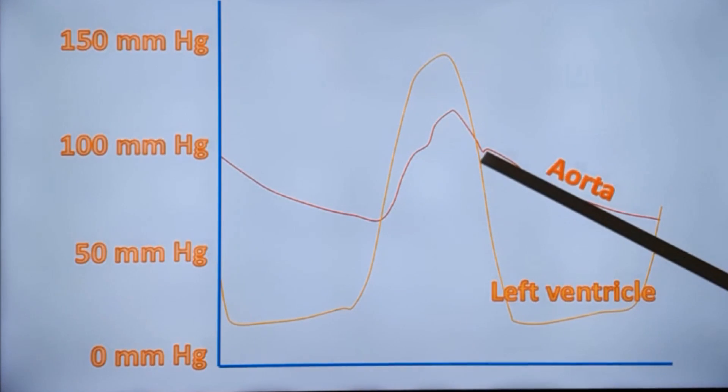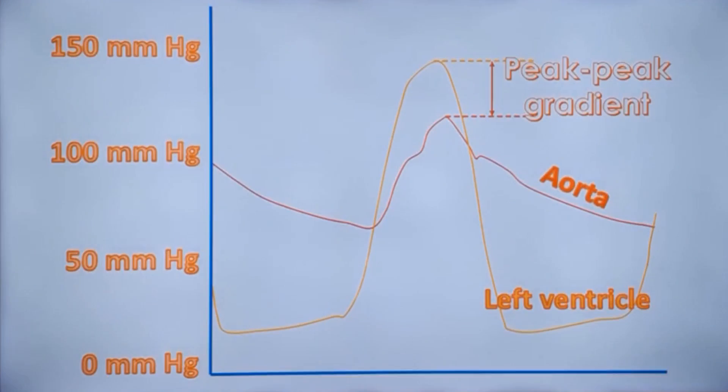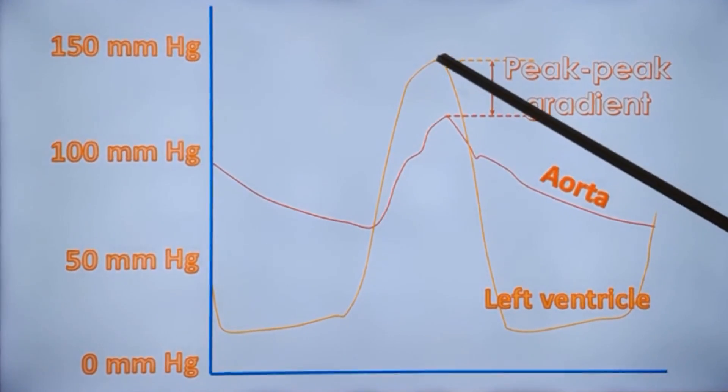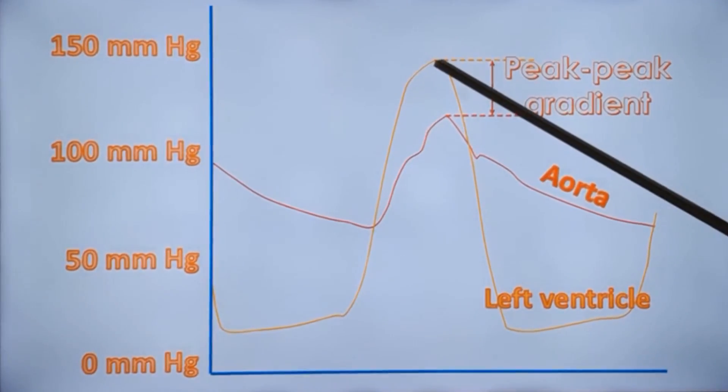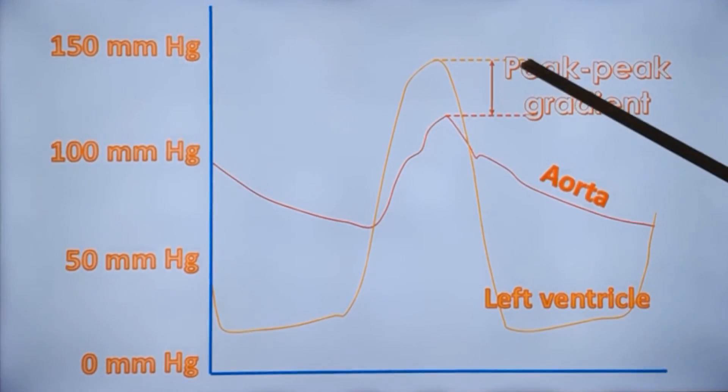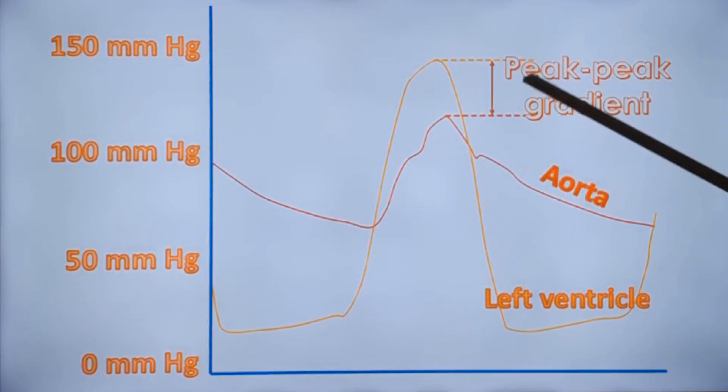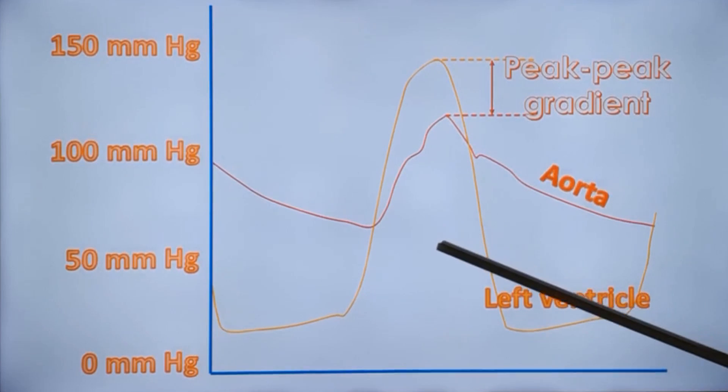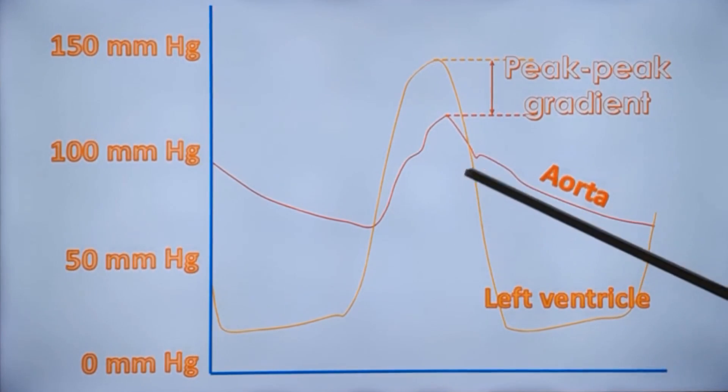And this notch is called the incisura. There is obviously a difference between the peak pressure in the left ventricle and the peak pressure in the aorta. This is known as the peak-to-peak gradient. So cath-derived gradient is known as peak-to-peak gradient.